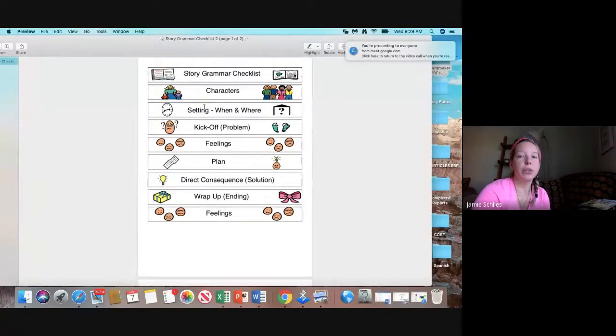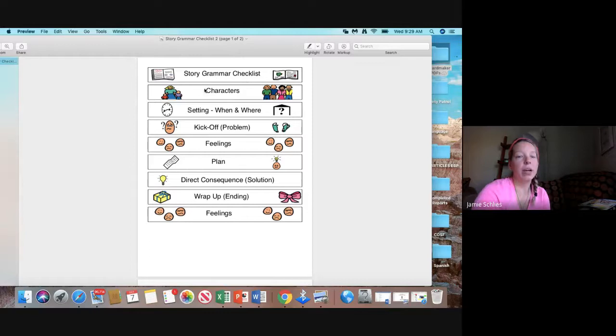There's eight. One, two, three, four, five, six, seven, eight. The title is here at the top, story grammar checklist. Our first story grammar element are the characters. Who will be in our book?